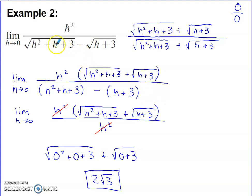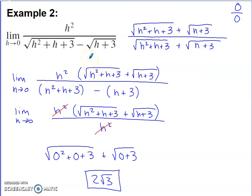The big transformation happens in the denominator. First times first is the bigger root times itself — the root squared — giving what's inside the bigger root. Outer and inner terms cancel (always the case with conjugates). For last times last, handle it in two portions: a negative times a positive gives a negative answer, and the square root of (h+3) times itself gives h+3. This set of parentheses is critical — overlooking it will cause your process to break down.